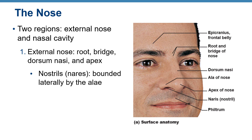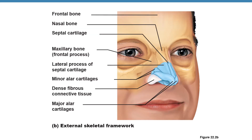The external nose includes the root with the bridge, the apex at the tip, and the external nares — the openings. The ala is the tissue surrounding the external nares. The nose is made up of the nasal nares, cartilage, and fibrous connective tissue that forms the ala.